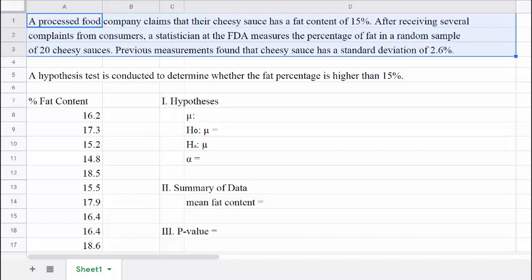Previous measurements found that cheesy sauce has a standard deviation of 2.6%. Remember that standard deviation is a measure of spread. We are going to conduct a hypothesis test to determine whether the fat percentage is actually higher than 15%.